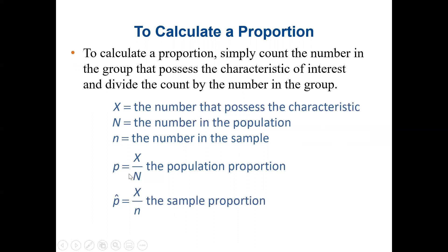In this case, to find the proportion of a population or population proportion, it will be X divided by uppercase N, which is the number that possesses the characteristics divided by the total population. Now, to find the sample proportion, which is normally the p-hat, it will be X again divided by lowercase n, which is the number that possesses the characteristics divided by the sample size.